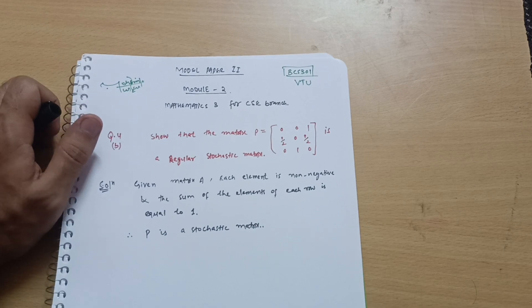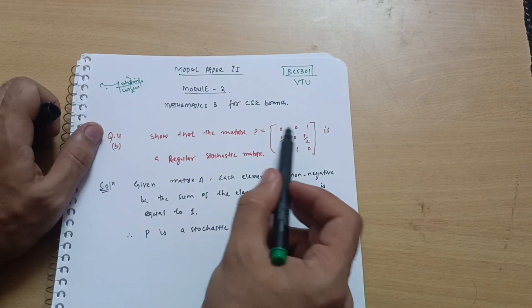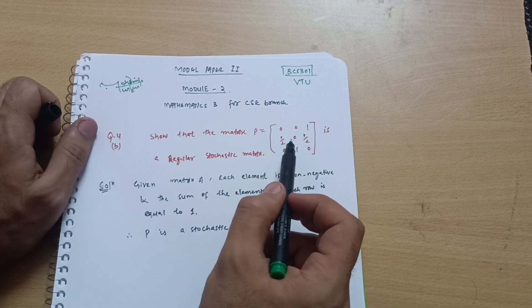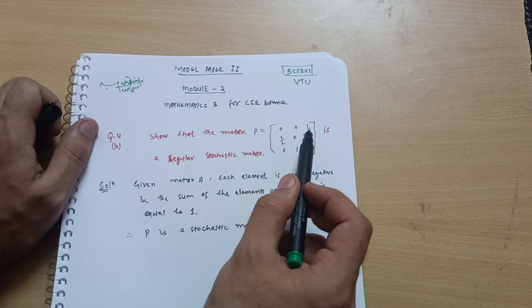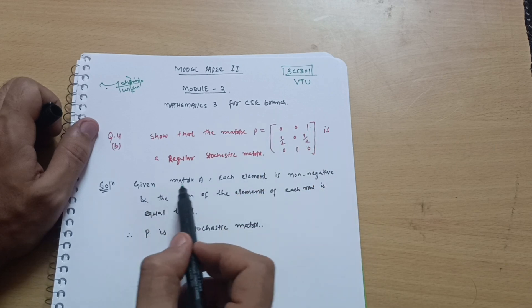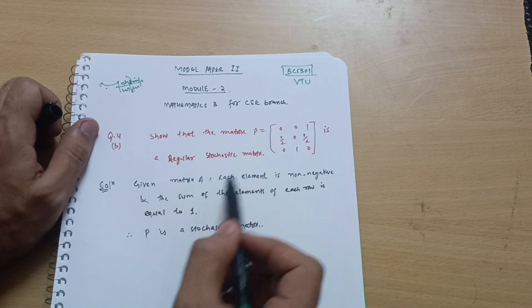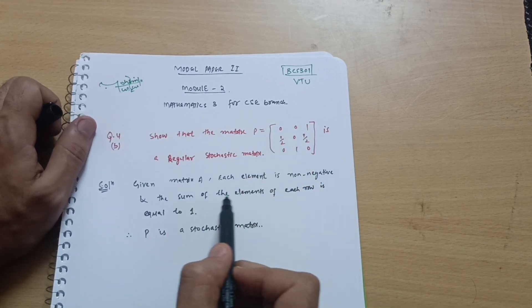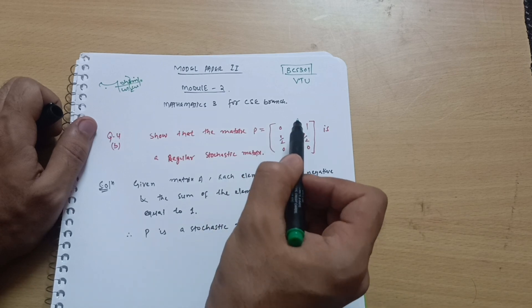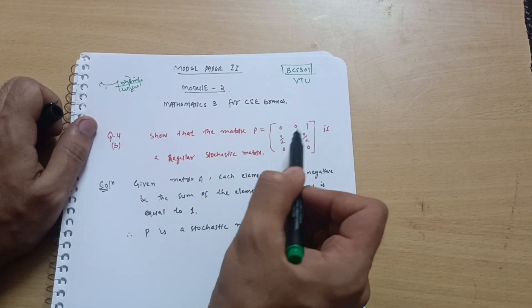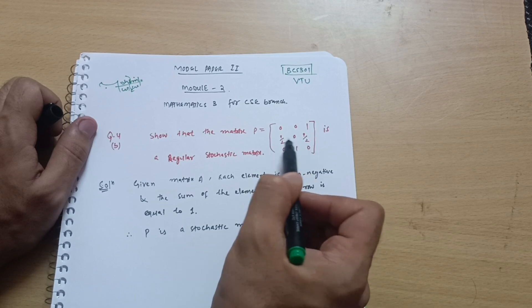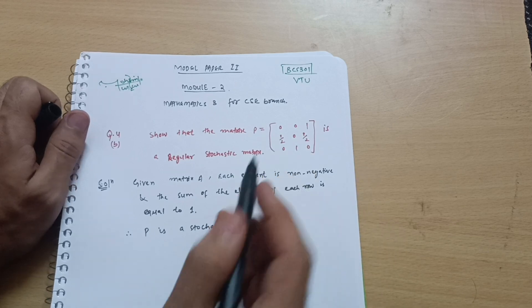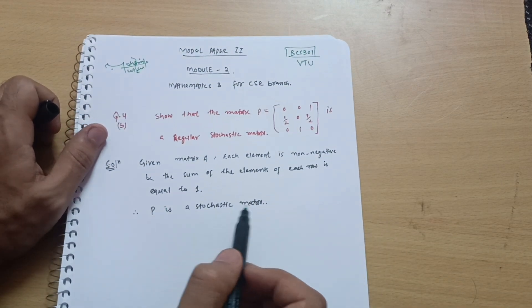First, you should understand what a stochastic matrix means. If all elements of a matrix are non-negative and the summation of each row equals 1, it is a stochastic matrix. In the given matrix P, each element is non-negative, and the row sums are: 0+0+1=1, 1/2+0+1/2=1, 0+1+0=1. So P is a stochastic matrix.